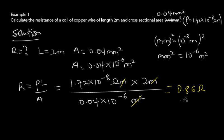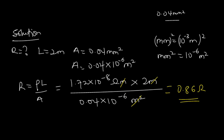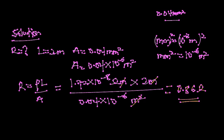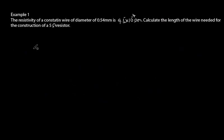That is how we solve for resistance with a question like this. Let's look at another example where we are given the resistivity, the resistance, and the diameter, and asked to find other parameters. Example number two: the resistivity of a constantan wire of diameter 0.54 millimeters is 4.5 times 10 to the power minus 7 ohm meters. Calculate the length of wire needed for the construction of a 5 ohm resistor.